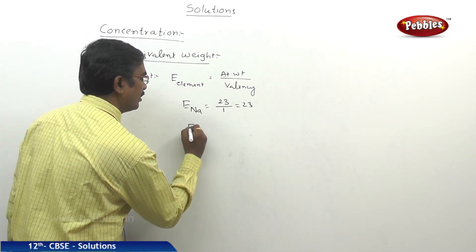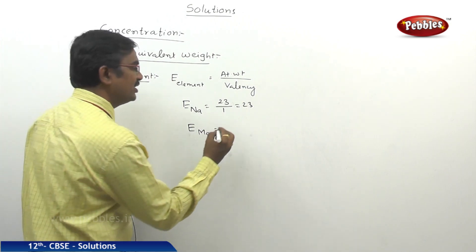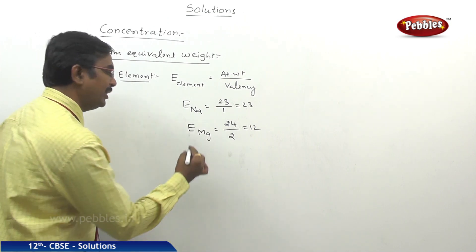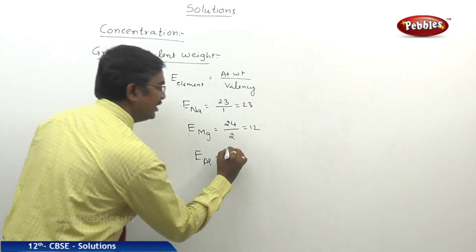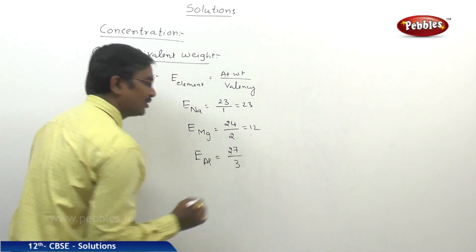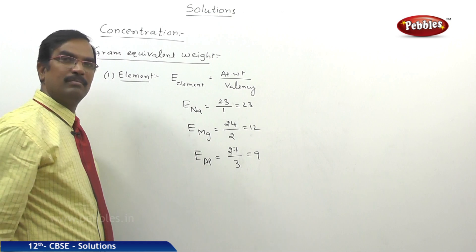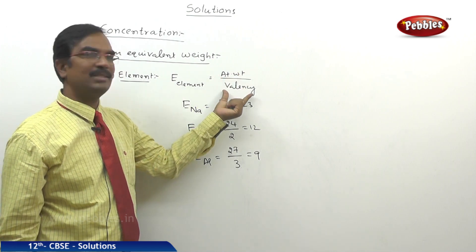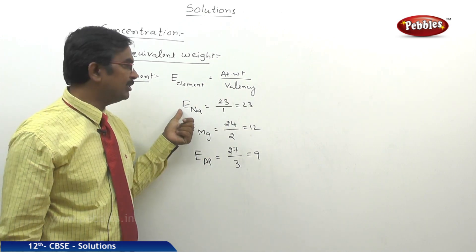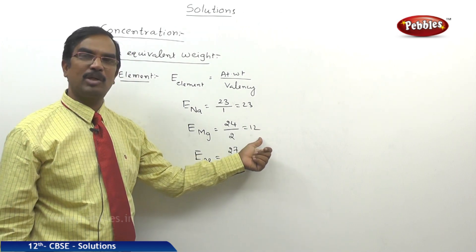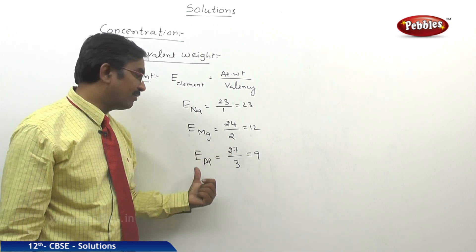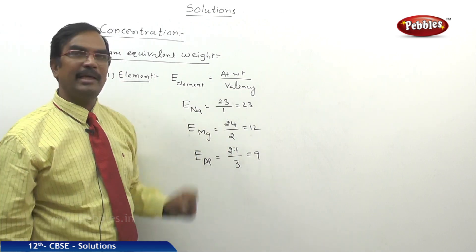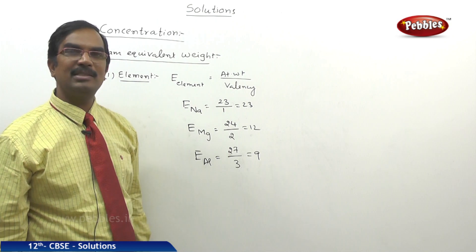Take magnesium. The equivalent weight of magnesium: its atomic weight is 24, its valency is 2, so the equivalent weight is 12. For aluminum, the equivalent weight is 9 — because the atomic weight is 27 and the valency is 3. So for any element, we can get the equivalent weight as its atomic weight divided by the valency of the element.